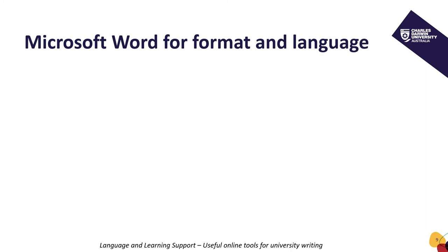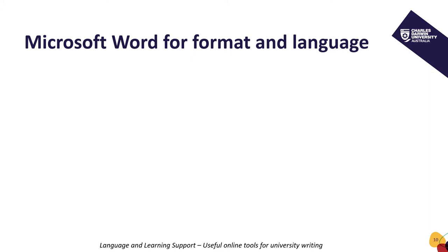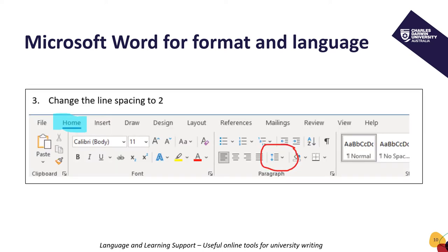Second, indent the first line of each paragraph by one centimetre. The screenshot shows two different methods. Third, change the line spacing to two. As you can see, it's possible to view a wide range of formatting options on your home menu, including how to change your line spacing.